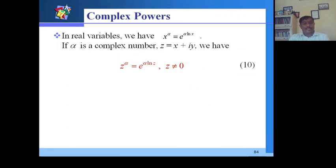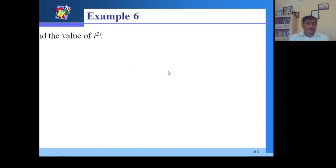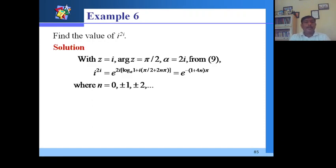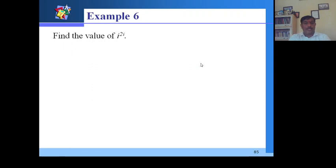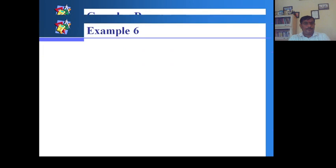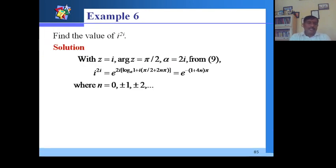Now we deal with complex powers using analytic functions. In real variables, x^α = e^(α ln x). For complex z = x + iy, we define z^α = e^(α·ln z) where z ≠ 0. For example, i^(2i) with z = i, arg(z) = π/2, α = 2i: i^(2i) = e^(2i·ln i) = e^(2i·(iπ/2)) = e^(-π + 4nπ).